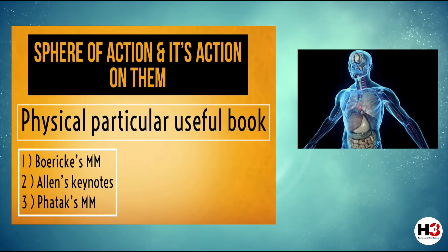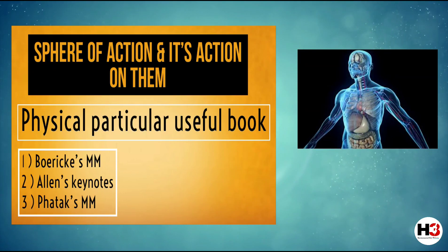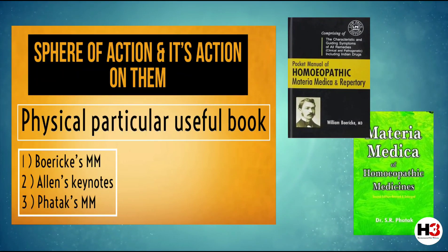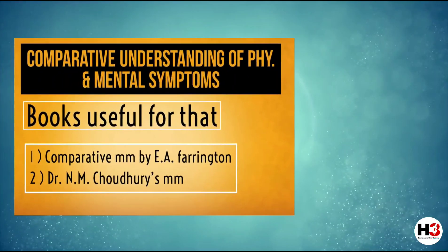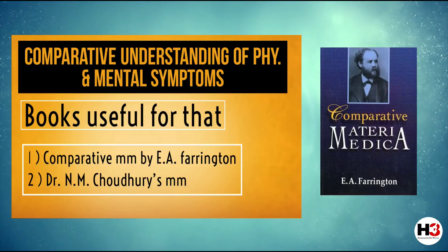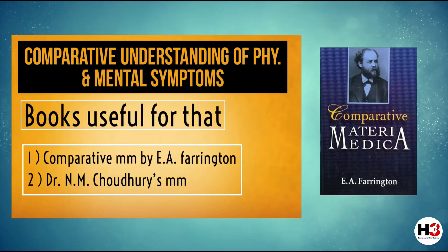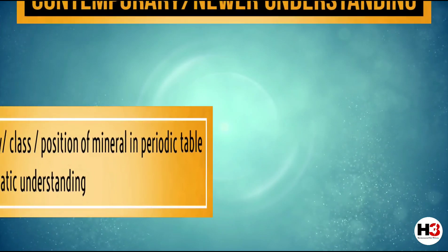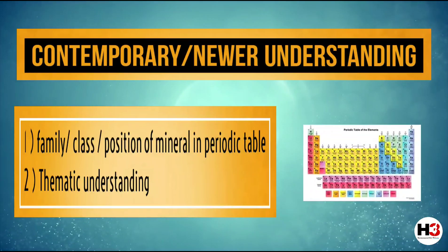The next point is to study the spheres of action of any homeopathic remedy and the action of that remedy on those specific organs. Then we should try to understand the important physical symptoms of that remedy. For this purpose, books like Fartak's Materia Medica, Allen's Keynotes, or Boericke's Materia Medica are really very useful. While studying these symptoms, many remedies will come close to a particular remedy, so it becomes important to compare those remedies. Books for this purpose include Comparative Materia Medica by Dr. E.A. Farrington and also Dr. N.M. Chaudhary's Materia Medica. These physical symptoms can be studied under subheadings like location, modalities, causative modalities, or physical general features and constitution.